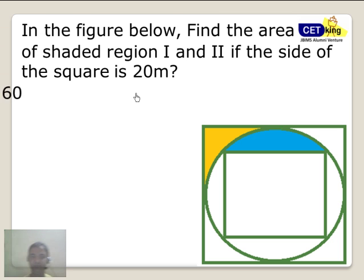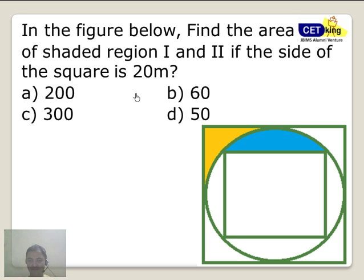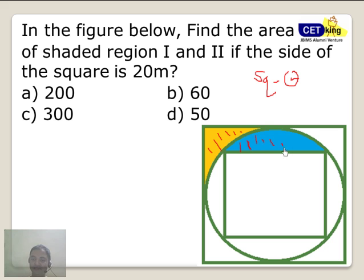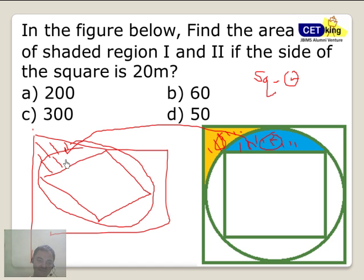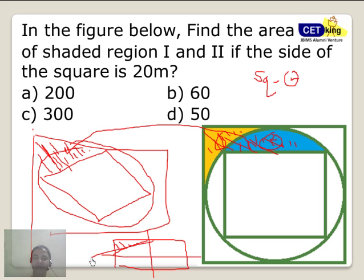This is another brilliant CAT question. If I do it by traditional method — square minus circle gives shaded region 1, then circle minus the inner square gives shaded region 2. Shaded 1 plus shaded 2 is the answer. But if I try to rotate and redraw this figure, I am merging them. So this shaded portion becomes the same question we did earlier. I am looking at half, half, 1/4, 1/4 — so 1 by 8. Answer is 1 by 8.